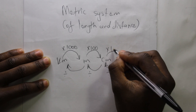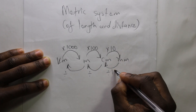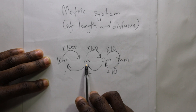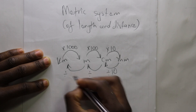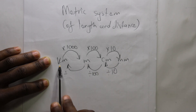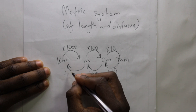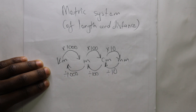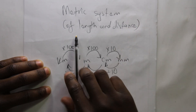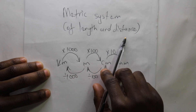From centimeters to millimeters we multiply by 10. From millimeters to centimeters we divide by 10; from centimeters to meters we divide by one hundred; from meters to kilometers we divide by one thousand. That's the metric system for length and distance.